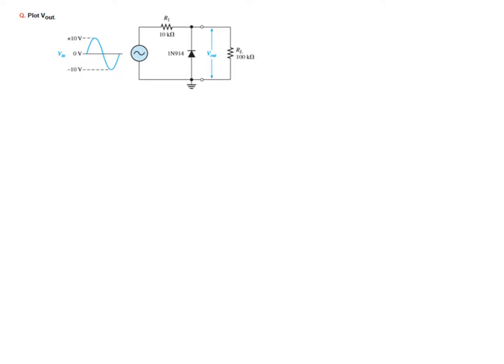This is the second example. In this case we have resistance of 10K and load resistance of 100K and the diode is 1N914. We will follow exactly same technique that we did.